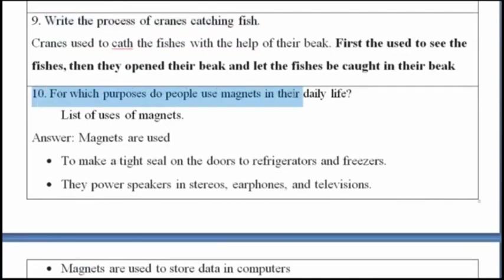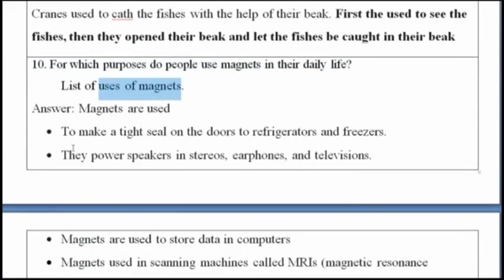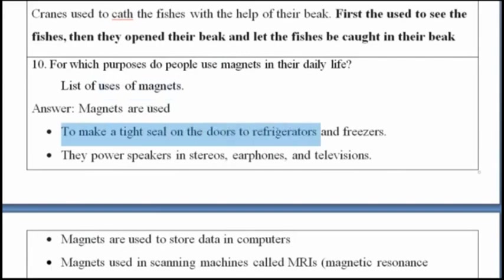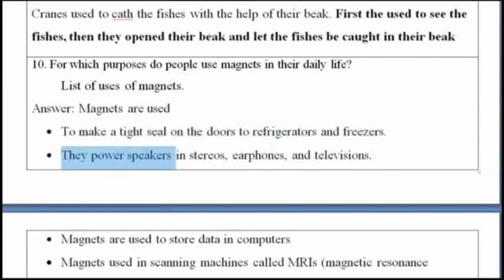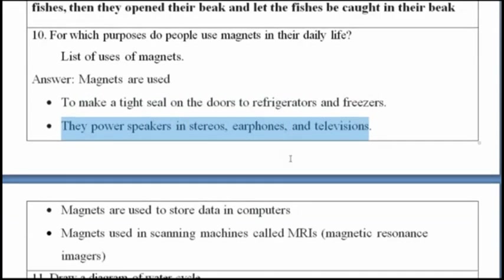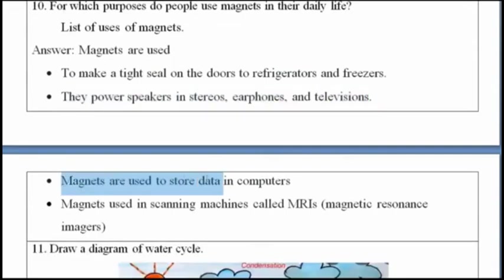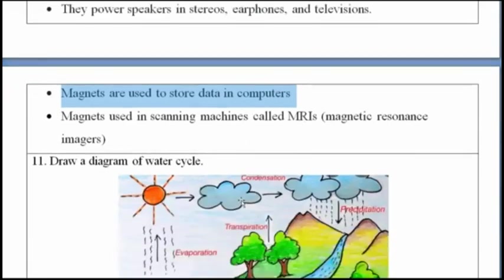Tenth question: for what purpose do we use magnets in our daily life? Magnets are used to make a tight seal on the doors of refrigerators and fridges. They are used in power speakers, stereos, earphones, and televisions. Magnets are also used to store data in computers and in scanning machines called MRIs.